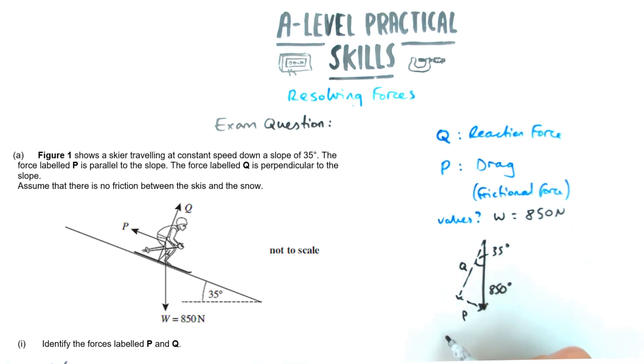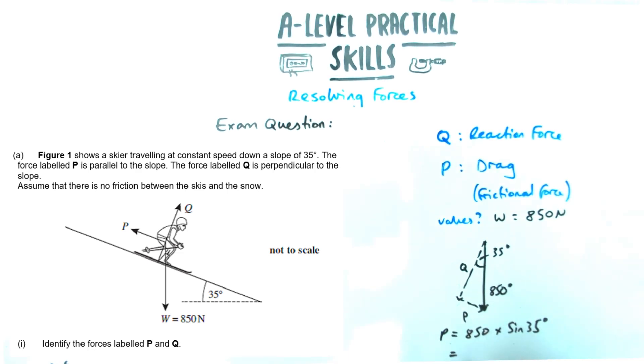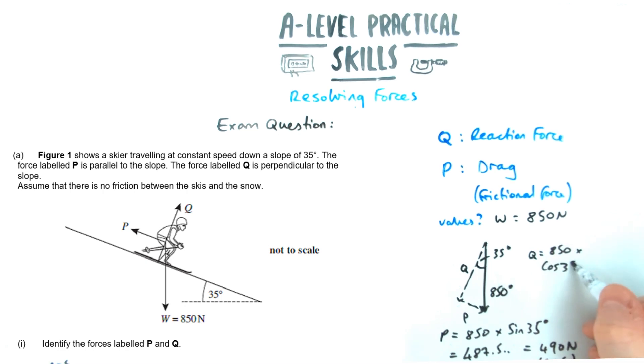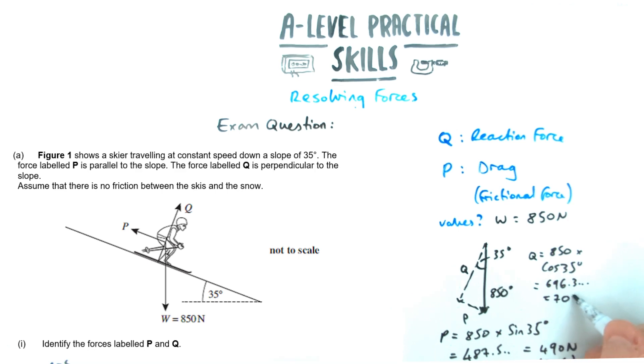If I was going to work out the values for P and Q, I've got P is the opposite. So that's going to be 850 the weight times by sine 35, which happens to equal 487.5 or rounding it to two sig figs is 490. And Q is going to be the adjacent. That's 850 times cos 35 gives me 696 or 700 to two sig figs.